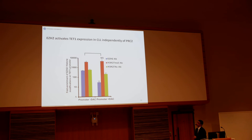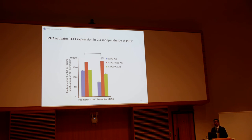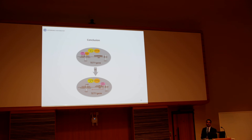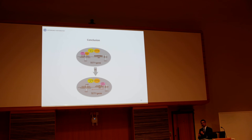Furthermore, our ChIP experiments revealed that following drug treatment, EZH2 showed reduced occupancy at the TET1 promoter, but that was not associated with any significant change in the enrichment or deposition of H3K27me3, further confirming that it is functioning away from PRC2. To conclude, we have shown two modes of regulation of the TET1 gene in CLL: by hypermethylation at the gene body region that controls cryptic antisense transcription, thereby protecting the corresponding gene expression and keeping it overexpressed; and additionally, we have shown that EZH2 binds at the TET1 promoter and in a non-canonical mode of action carries out trans-activation of the gene in CLL.